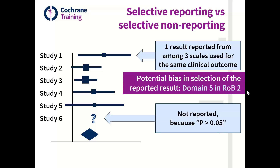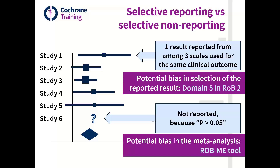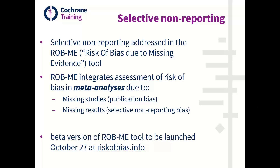Another type of selective reporting — one many of you will be more familiar with from the previous Cochrane risk of bias tool — is where trialists indicate they measured a particular outcome but then don't report any data at all, or maybe just indicate the results were not significant rather than giving summary statistics. That type of selective reporting is not included in the ROB2 tool, because ROB2 is designed to assess risk of bias in specific results in a study, whereas when you don't have a result available, that leads to bias in the meta-analysis that's unable to include that study.